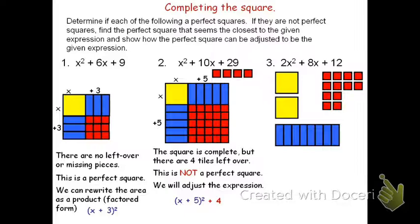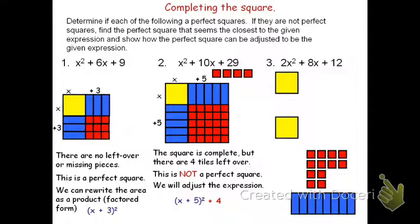To do problem 3, we see that we have 2x², 2 of the yellow squares, 8 of the rectangles, 8x, and 12 of the ones, 12 of the red squares. We'll start by spreading the x²'s out into equal piles. We have 2 of the x², which means we'll split those up.